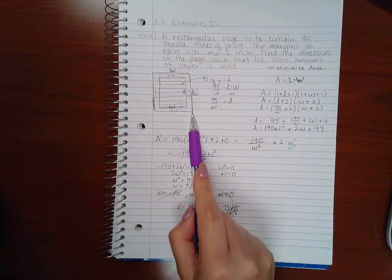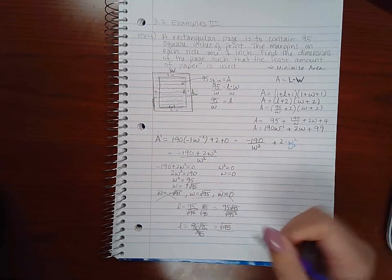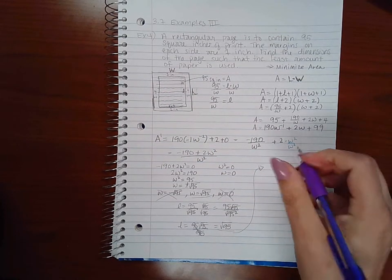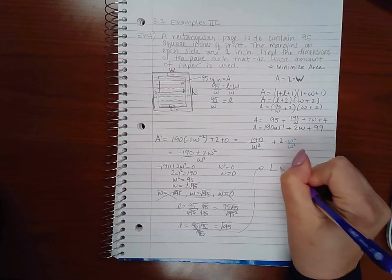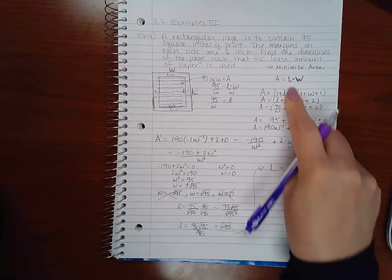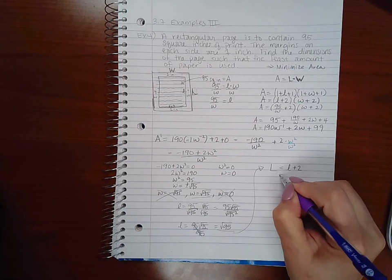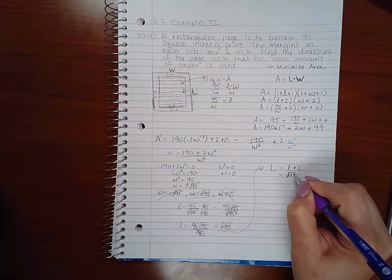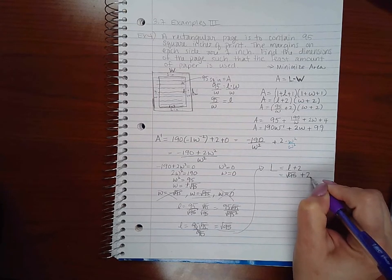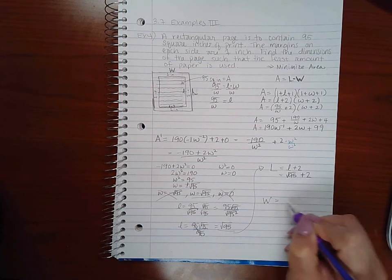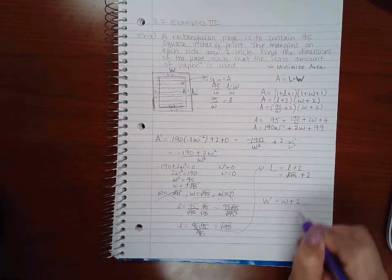They asked me to find the dimensions of the page, the whole page. So what they wanted to know was what is big L. Well, big L we realized was little l plus 2, so square root of 95 plus 2. And big W was little w plus 2, which means square root of 95 plus 2.